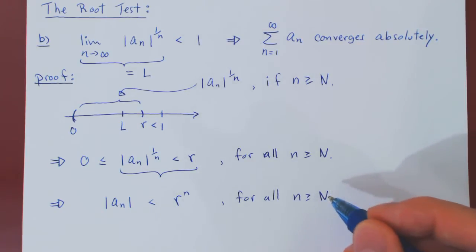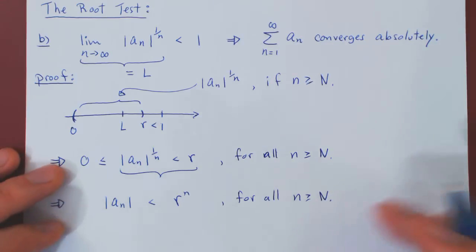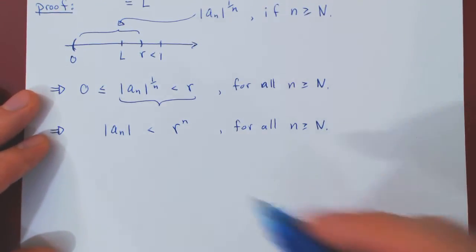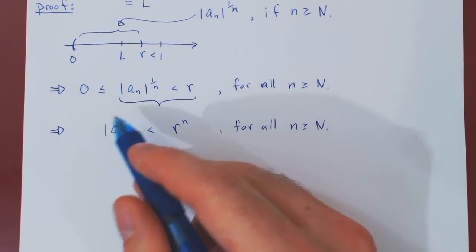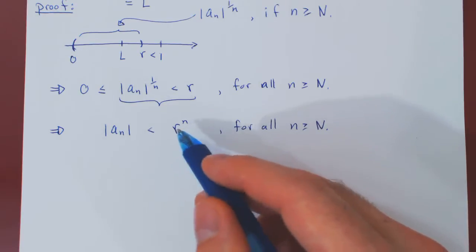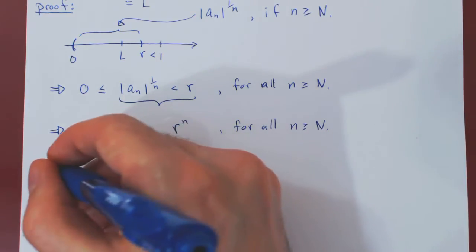Keeping in mind, uppercase N is some fixed positive integer. Well, if you think about this, if all the terms on the left are less than the terms on the right, for n bigger than this point, then if we sum the smaller terms...